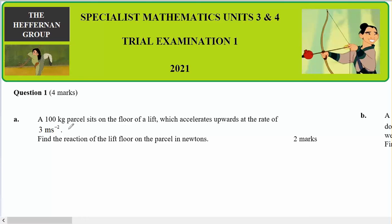Question number one. A hundred kilogram parcel sits on the floor of a lift which accelerates upwards at a rate of three meters per second squared. Here's the floor of the lift. There is my particle. That's 100 G. That's the normal reactive force accelerating upwards at an acceleration of three.